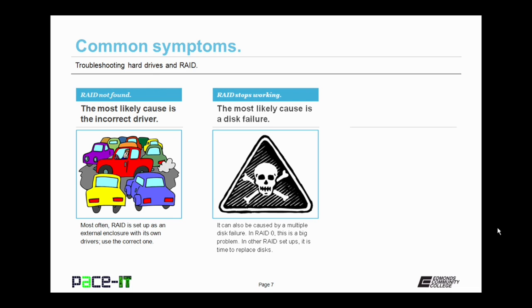If your RAID was working and then the RAID stops working, the most likely cause is a disk or disks failure. In a RAID 0, this is a big problem as your data will be difficult to recover. In other RAID setups, that just means it's time to find the failed disk and replace it.